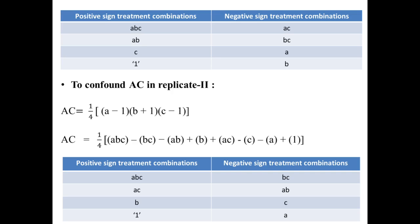We form a table showing positive and negative sign treatment combinations. When AB is the confounded effect, the positive sign treatment combinations are ABC, AB, C, and 1, and the negative sign treatment combinations are AC, BC, A, and B.